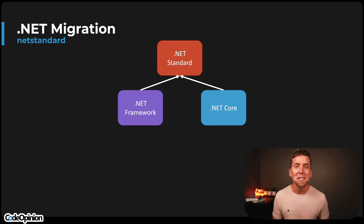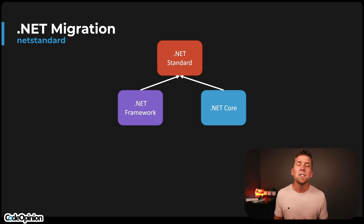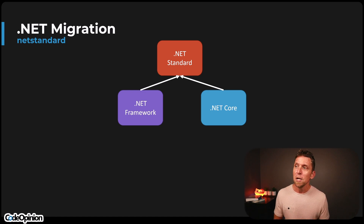An important part of this history lesson is understanding .NET Standard. The super simplified version: think of .NET Framework and .NET Core as completely different implementations of .NET. Then there's .NET Standard, which you can think of as an interface that those two implement. So if a library is .NET Standard compliant, it will work on both. That intermediate step I mentioned is about .NET Standard — if our entire codebase and dependencies were .NET Standard compliant, I could run it under .NET Framework 4.8 or .NET Core 2.1.